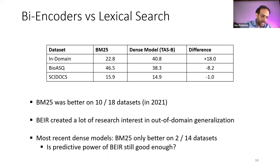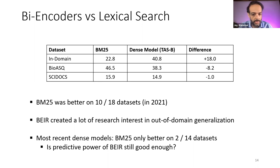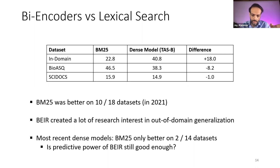One takeaway — I don't know if it was obvious to people before — is why was BEIR built so that it uses datasets from different domains? Was it clear, or was it a suspicion, that it's challenging for dense retrieval to do domain adaptation — like you train a model on legal data and then it can't search Wikipedia?